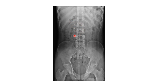An artifact is a structure that does not normally lie in the body but appears in the X-ray because of wearable items such as a ring, button, hook, or belt. It should not be confused with the internal structures of the body. This concludes our discussion of the plain X-ray of the abdomen.